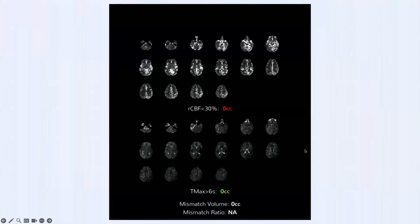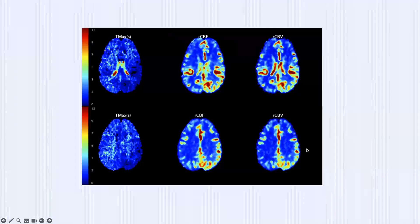Case 5: acute aphasia and confusion, ASPECTS 10, nothing to see on CT perfusion numbers — zero and zero. But the color maps show decreased, dark-blue Tmax in the left MCA and left PCA territories — left temporal, parietal, and occipital — opposite of what I've been showing. On CBF and CBV maps, there's actually elevated cerebral blood flow and volume: this is hyperperfusion, specifically hyperperfusion from seizure.